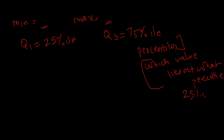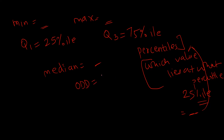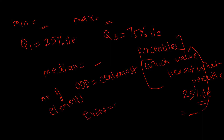For example, if I want to calculate the value that lies at the 25th percentile, I get an index position and check for that index position in the dataset. The median is the exact centermost value. If the number of elements in your dataset is odd, we take the centermost value. If the number of elements is even, we take the middle two values, divide them by two, and whatever value comes out is your median.